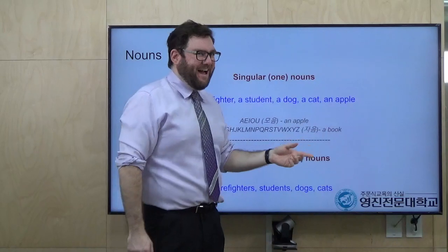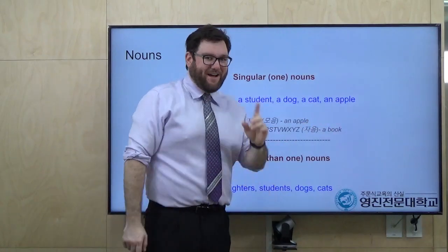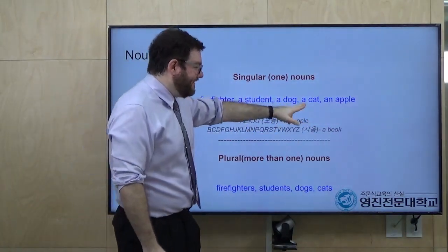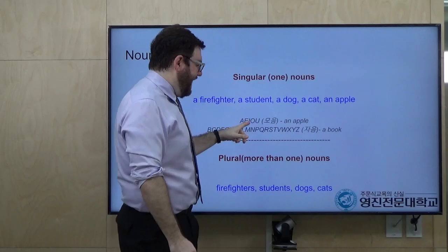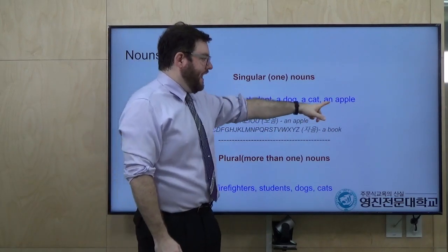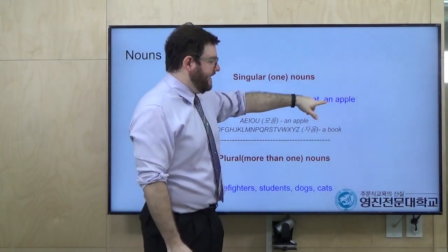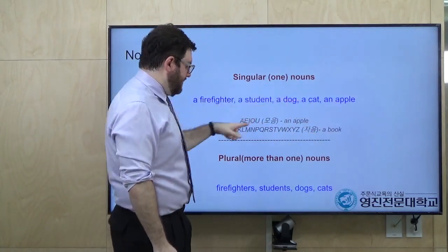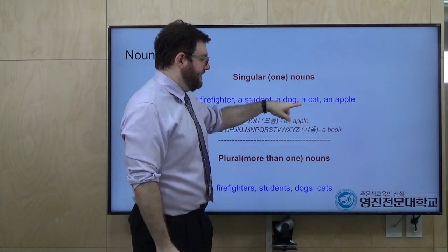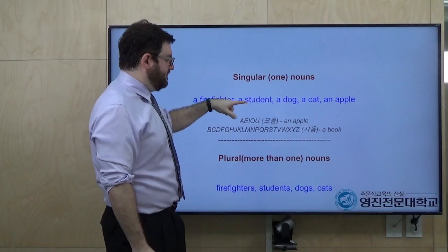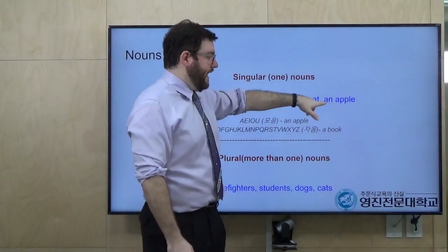And you could say a cat — 한 마리 — or 한 고양이. And an apple. But we have some different rules: notice here it's 'a cat' and 'an apple.' If the first letter is a vowel — A, E, I, O, U — a 모음 — we say 'an apple.' But if the first letter is a consonant — a 자음 — like C, D, S, F — we say 'a cat,' 'a dog,' 'a student,' 'a firefighter.' But since apple starts with a vowel, we say 'an apple.'